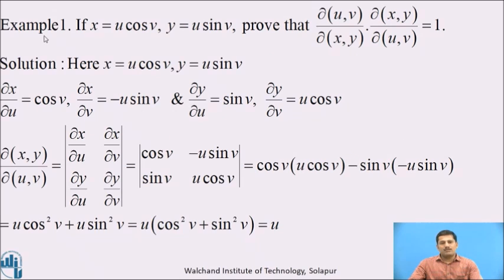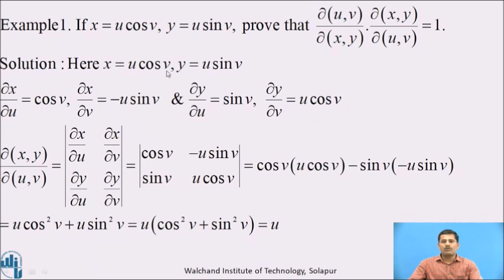Let us consider examples. Example number 1: if x equals u·cos(v) and y equals u·sin(v), prove that Jacobian of uv with respect to xy multiplied by Jacobian of xy with respect to uv equals 1. Solution: here x and y are given in terms of uv, therefore we first find the Jacobian of xy with respect to u and v.